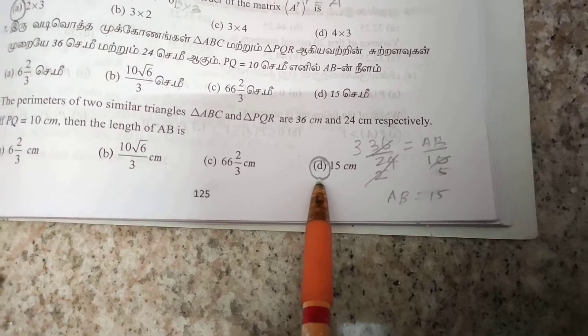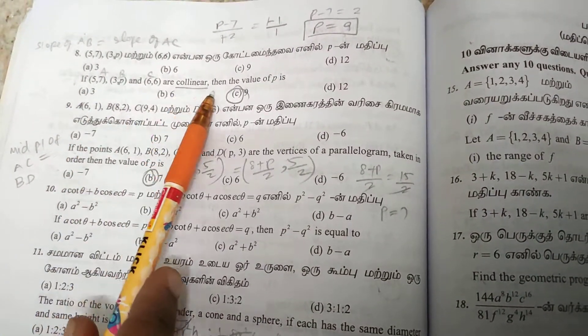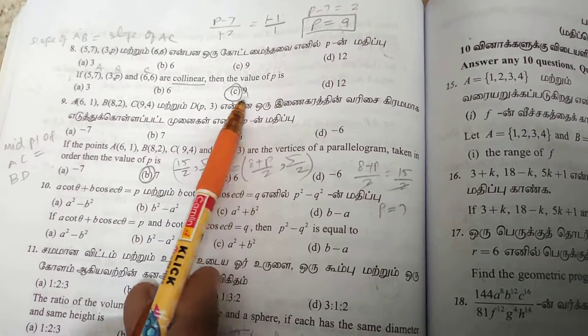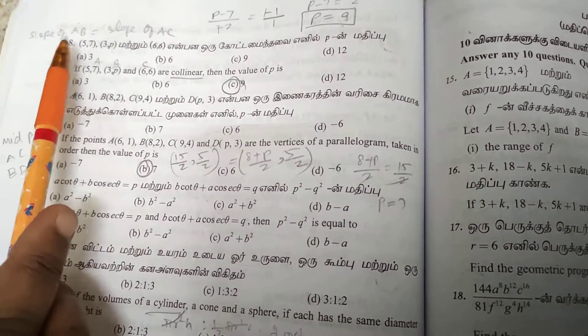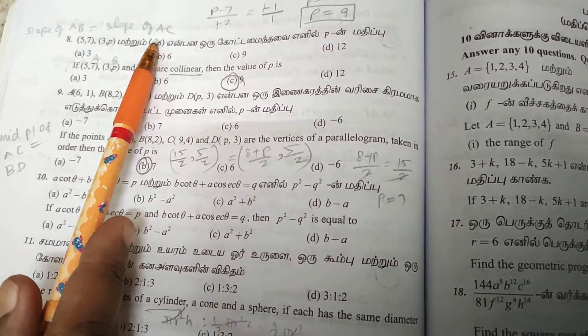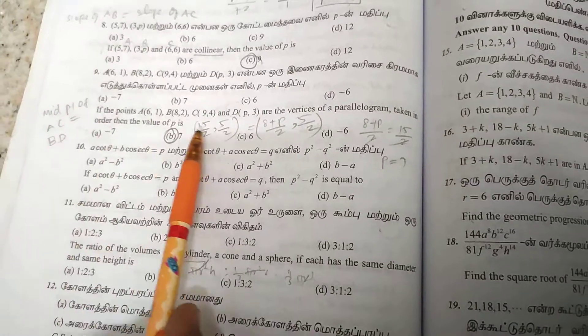If the points are collinear, find the value of P. For collinear points ABC, slope of AB equals slope of AC. Calculating this gives P equals 9.